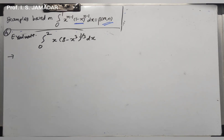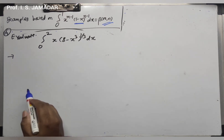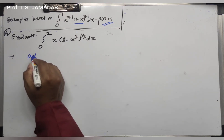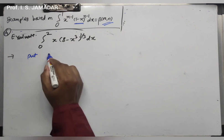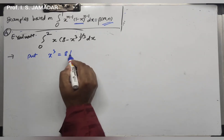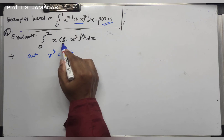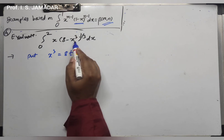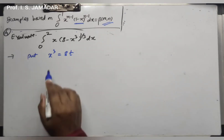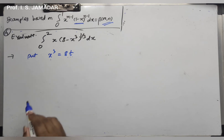To get the (1-t) form from (8-x³), put x³ equal to 8t. Then 8-x³ becomes 8-8t, and taking 8 common gives 8(1-t), which is the required form. Differentiating x³ = 8t gives 3x² dx = 8 dt, so dx = (8/3) times (1/x²) dt.